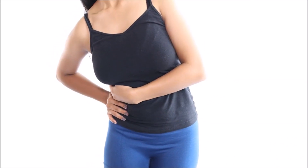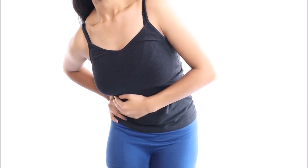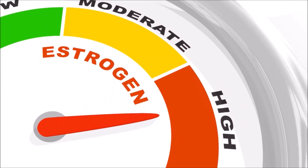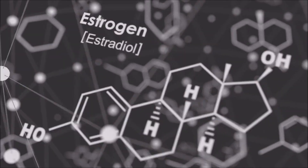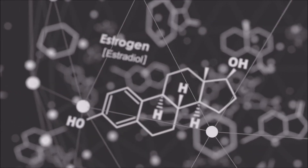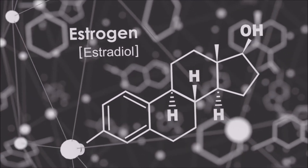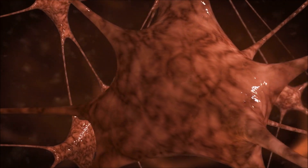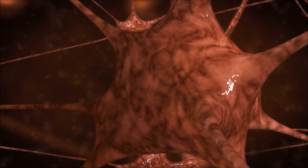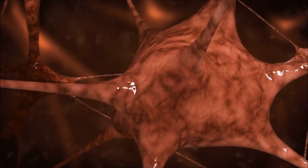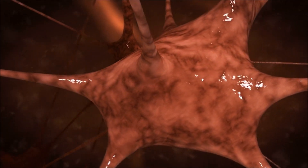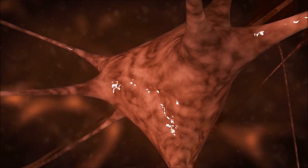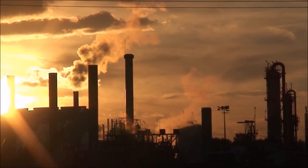So what causes uterine fibroids? Increases in local estrogen, specifically estradiol concentration within the fibroid itself, are thought to play a major role in the development and growth of fibroids. Concentrations of estrogen receptors are higher in fibroid tissue than in surrounding tissue, and in addition to an excess of estrogen production within the body, the presence of xenoestrogens are also significant.